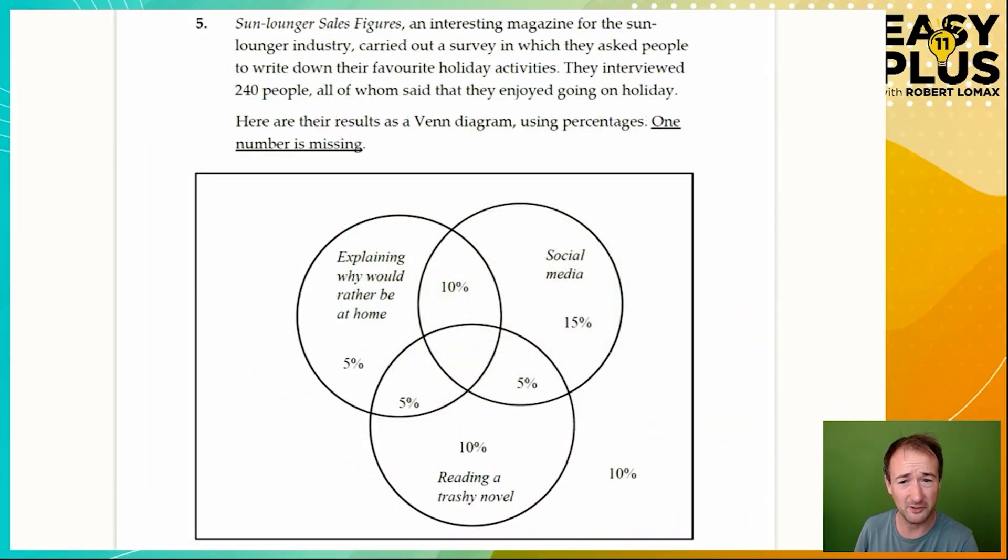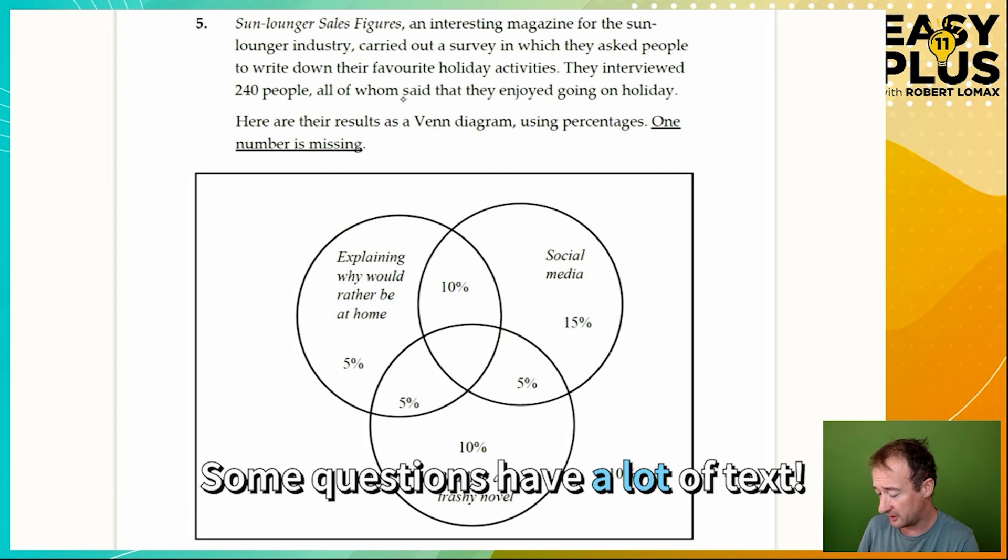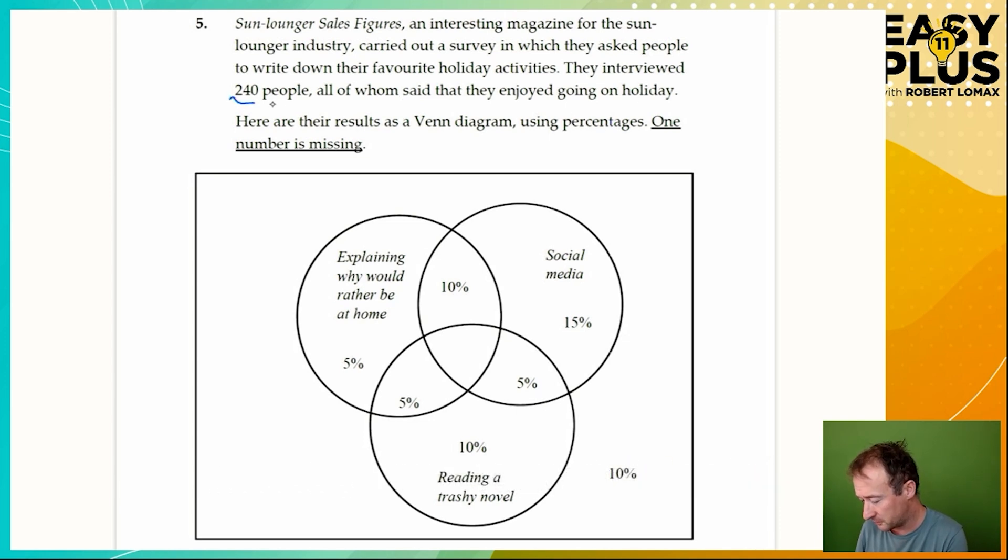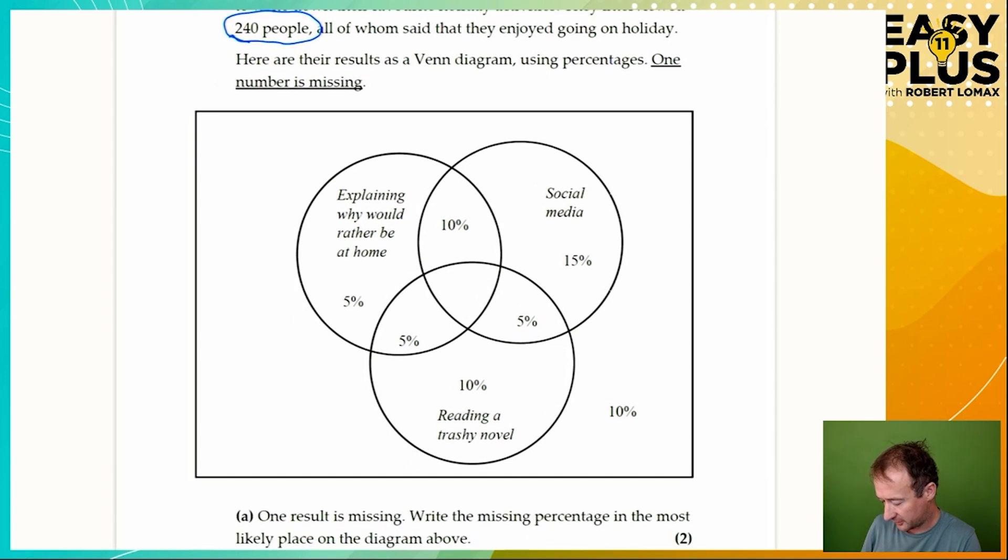So here we have a very typical looking Venn diagram question. Let's read the information at the top. Sun Lounger Sales Figures, an interesting magazine for the sun lounger industry, carried out a survey in which they asked people to write down their favorite holiday activities. They interviewed 240 people, all of whom said that they enjoyed going on holiday. Here are their results as a Venn diagram using percentages. One number is missing.